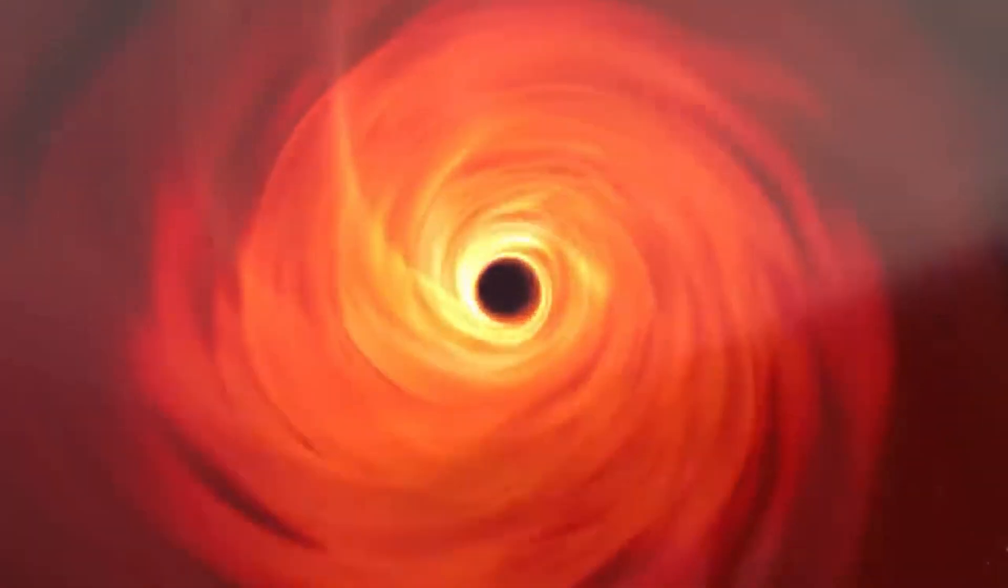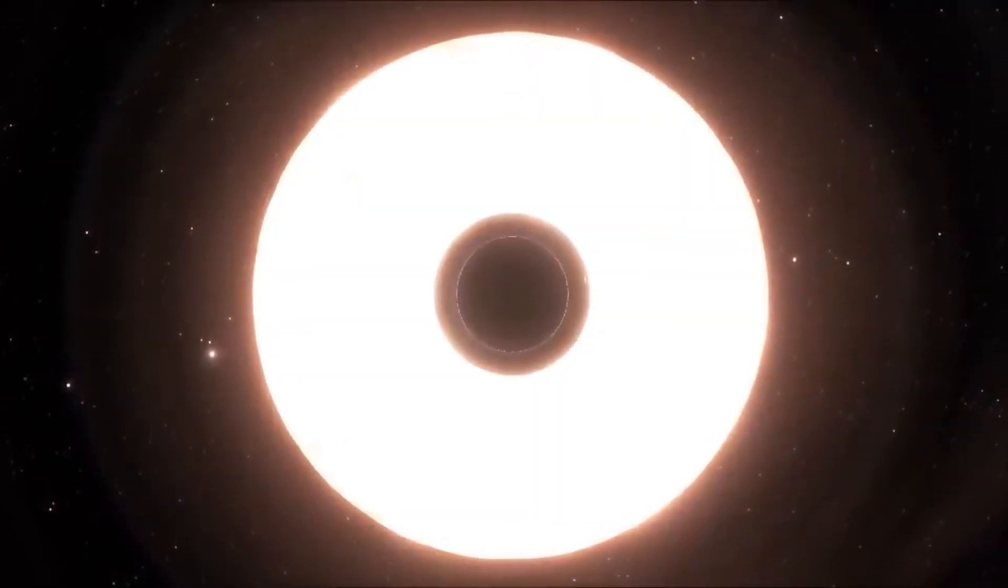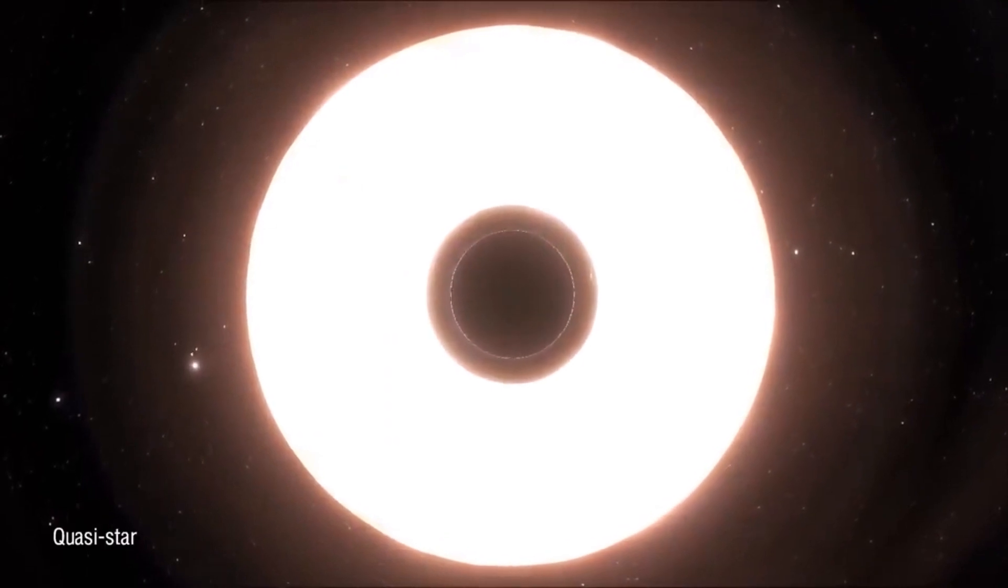Similar to intermediate-sized black holes, supermassive black holes can also form from tiny seeds such as stellar black holes or a type of ancient giant star called a quasistar.